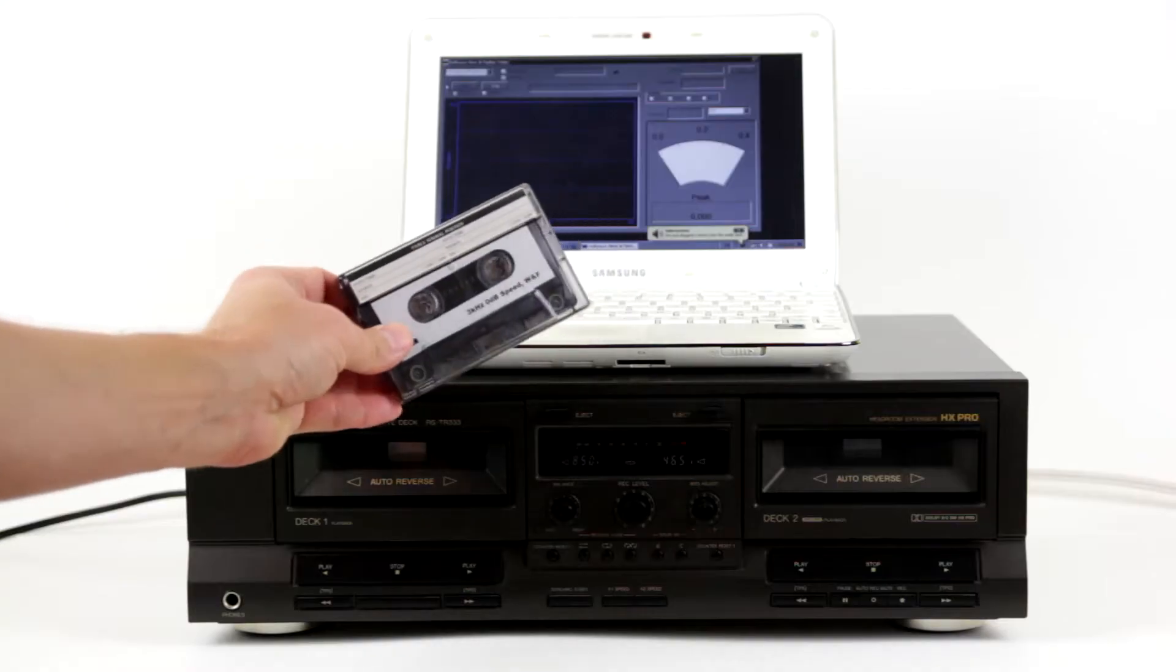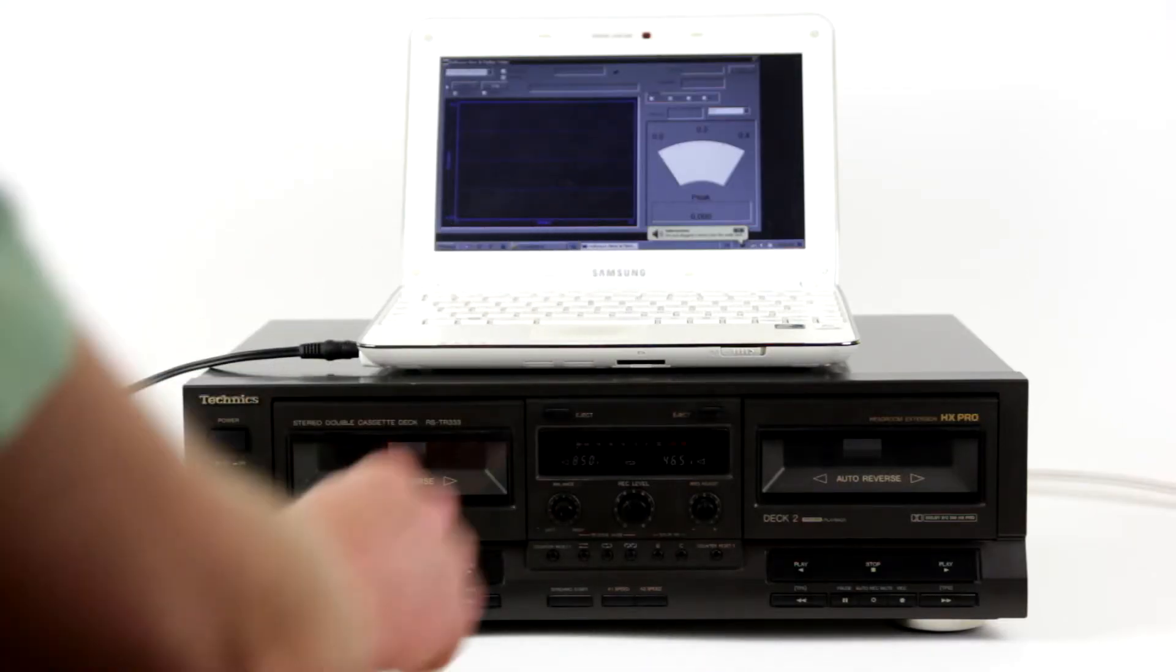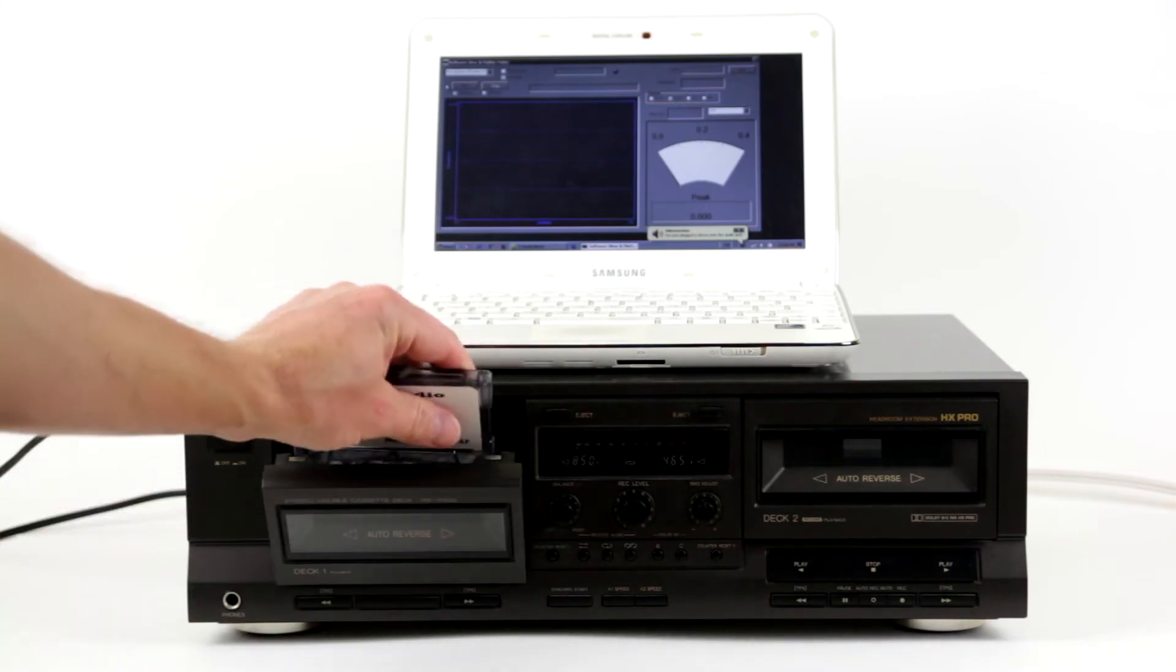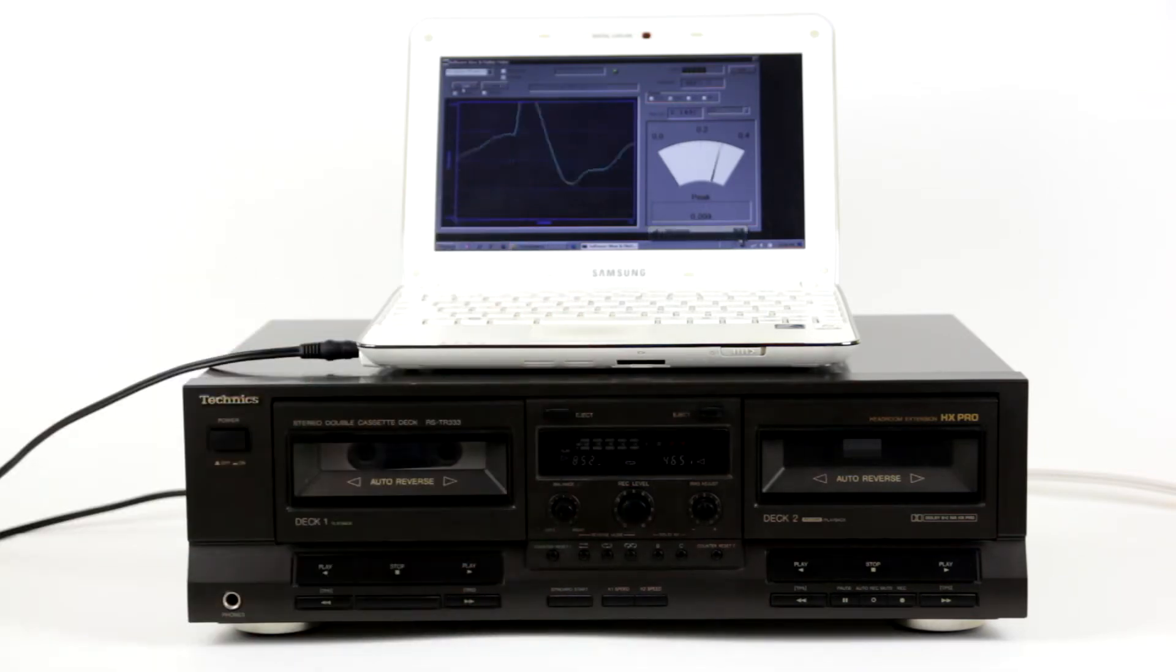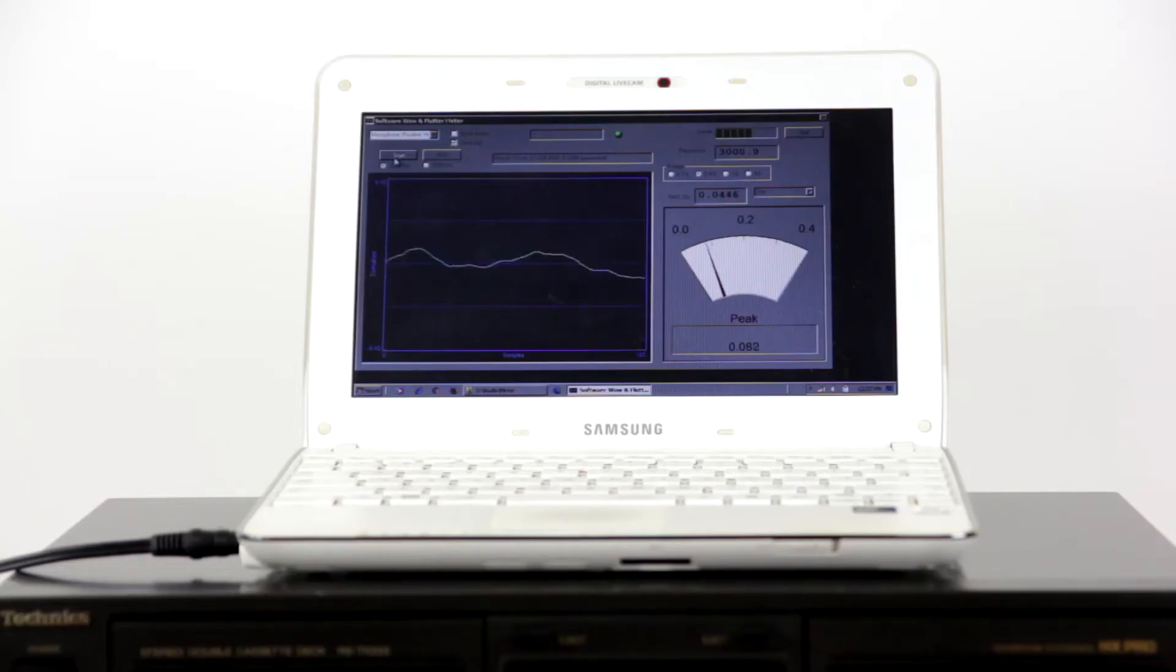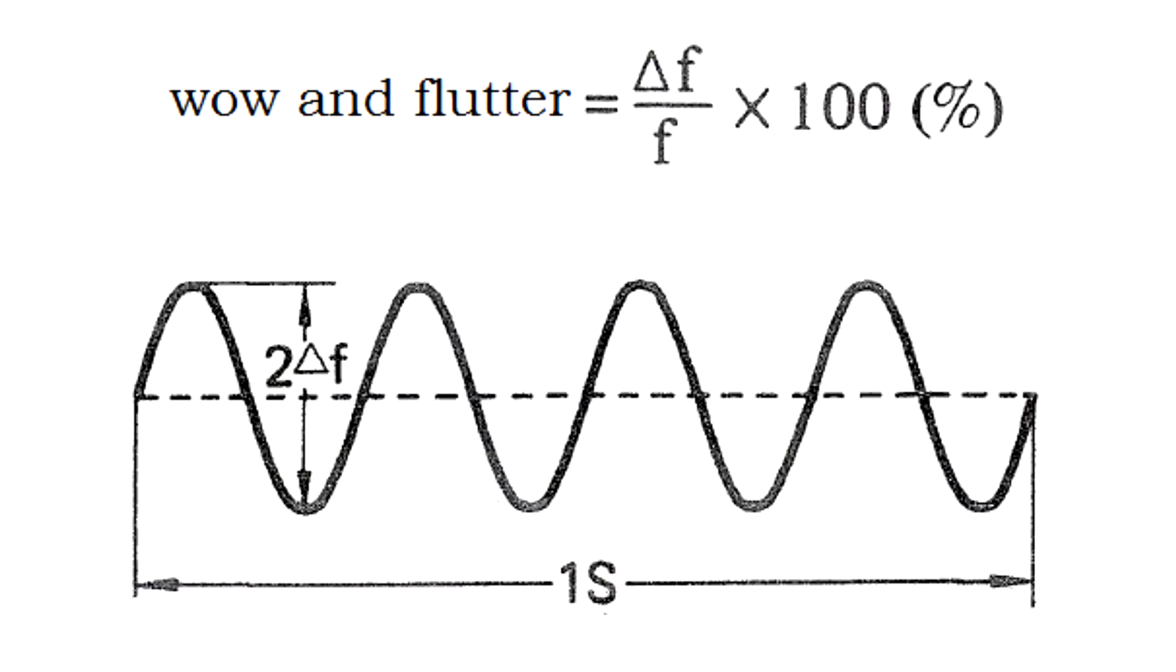To measure Wow and Flutter, use the same test tape or record. The pitch fluctuations are measured relative to the center frequency established on the previous step. These fluctuations, formally defined by International Electrotechnical Commission as undesirable frequency modulation components, are also represented as percentage.